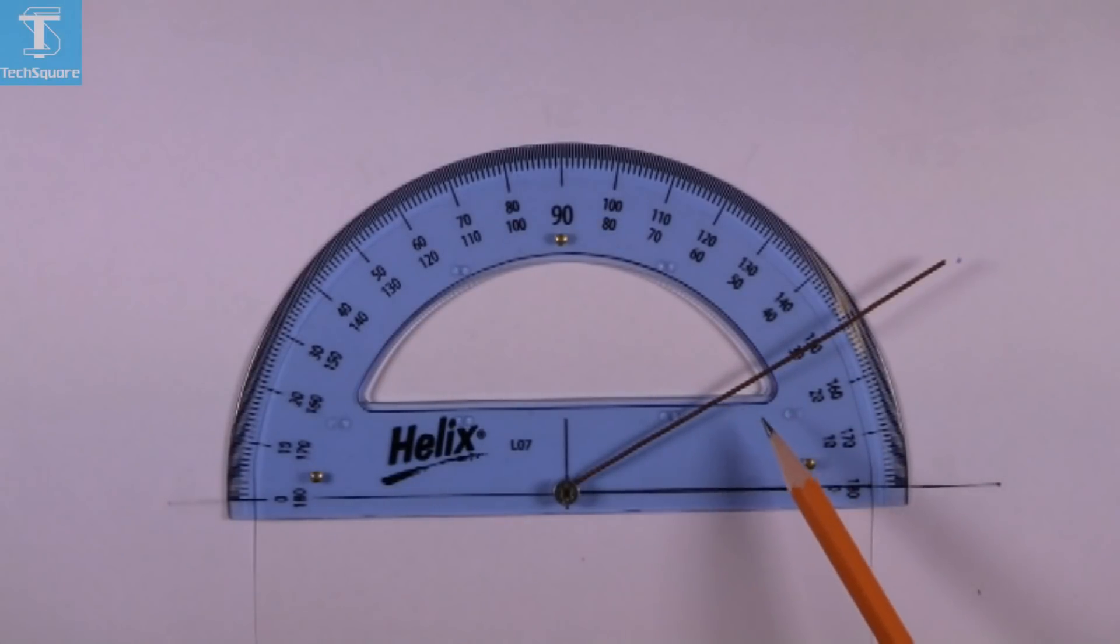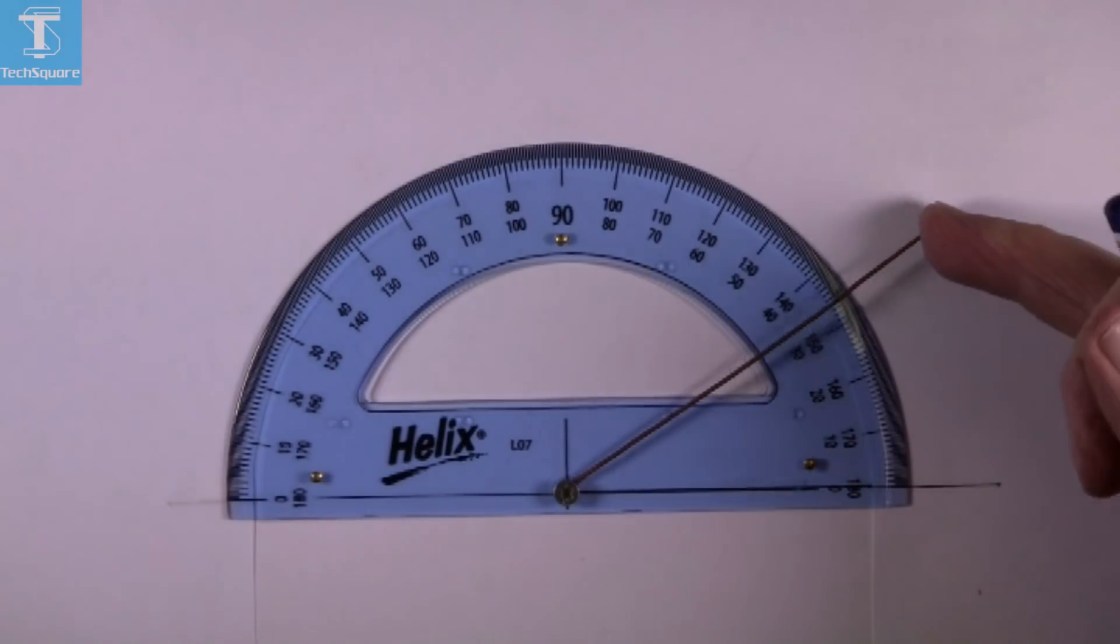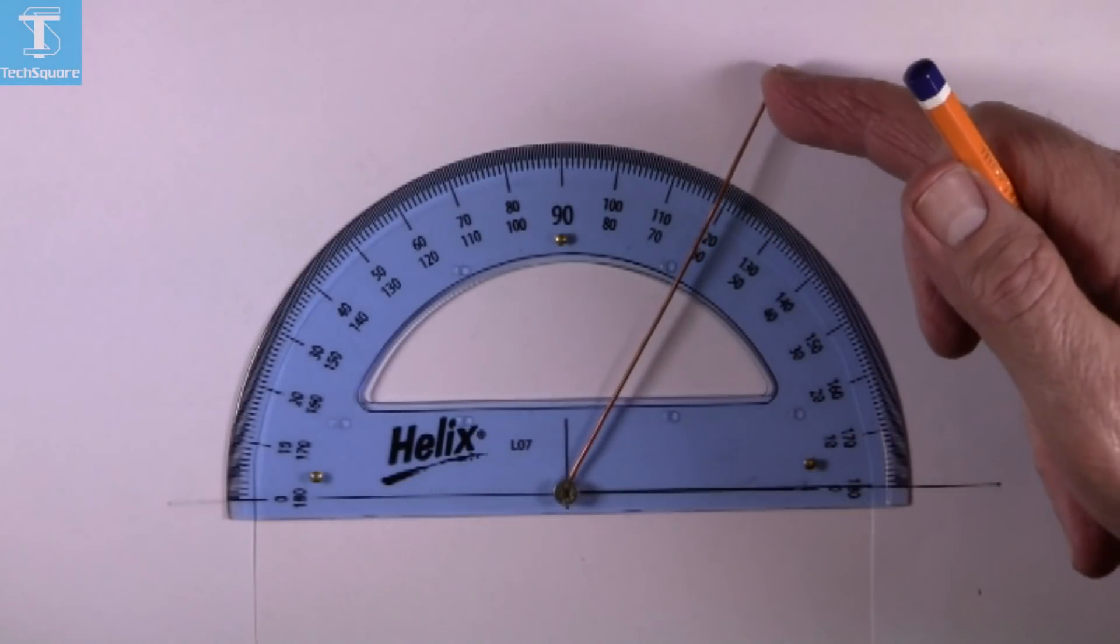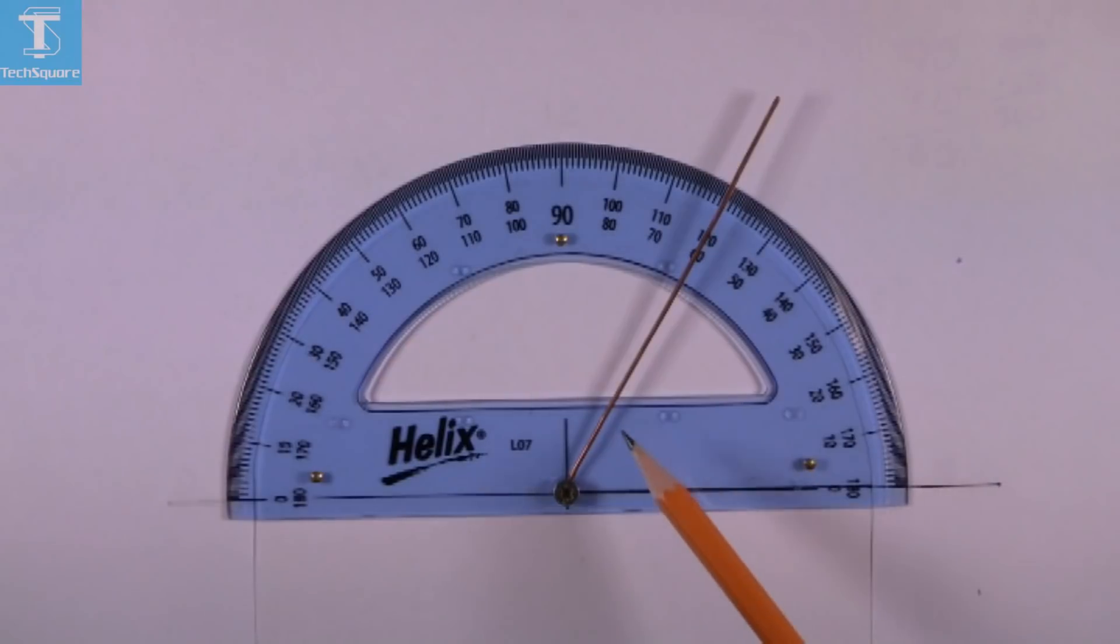And when we move this hand up here, the angle between here and here is 30 degrees: 10, 20, 30. So that's 30 degrees.